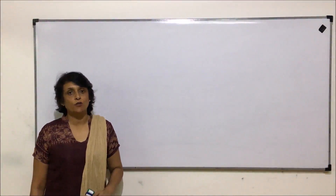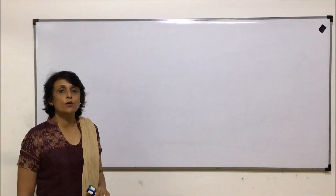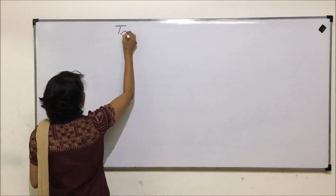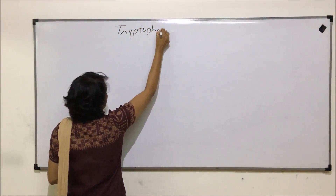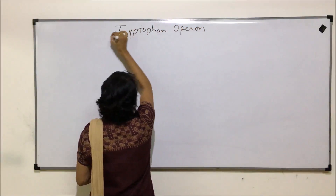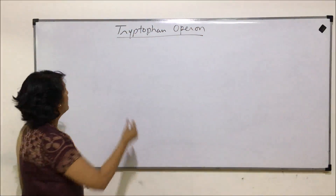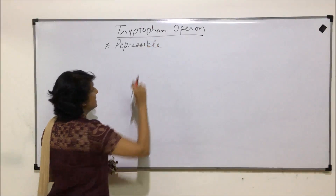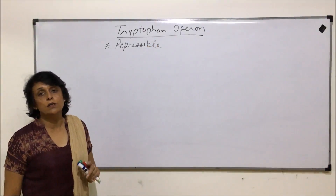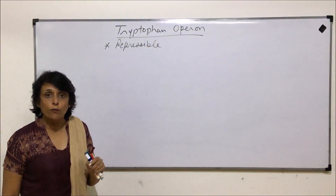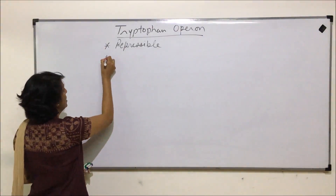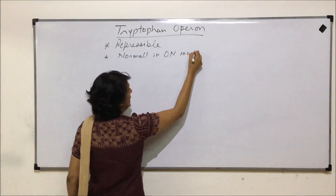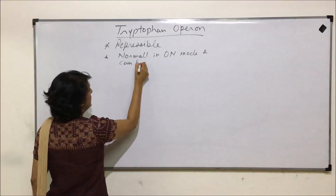We'll talk about tryptophan operon. In the earlier video we discussed about lac operon, which is an inducible operon. Tryptophan operon is a repressible operon, meaning it normally remains in the ON situation and it can be turned off when conditions change.